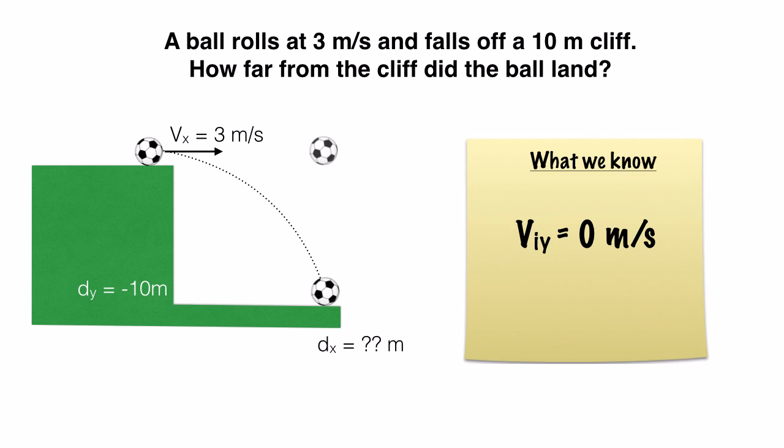And finally, we also know that when a ball is dropped or when something starts to fall, its initial velocity in the y direction is zero. Because it starts at not moving in the y direction and then accelerates down due to gravity.